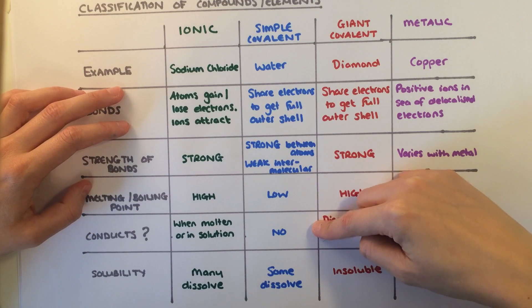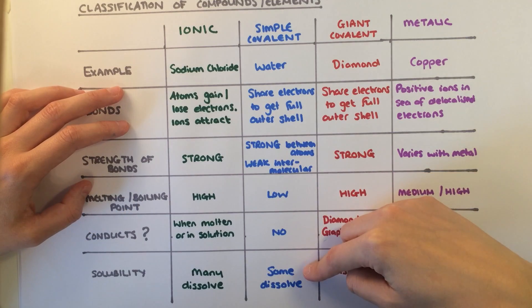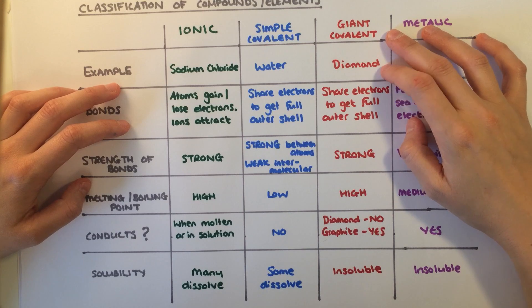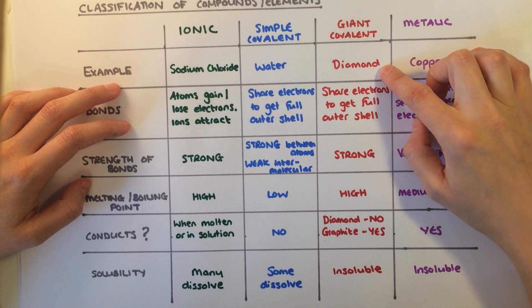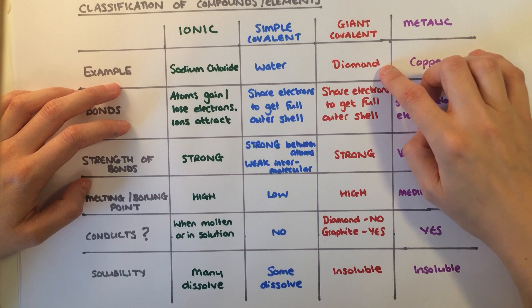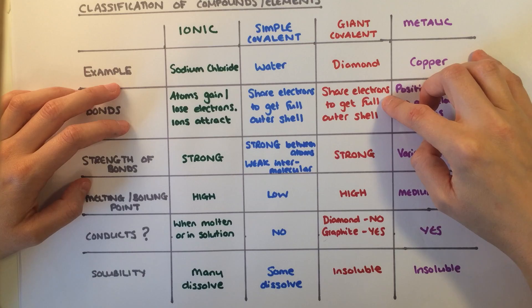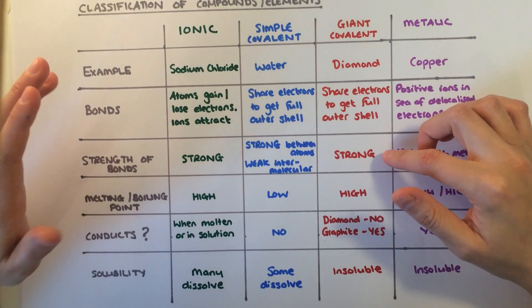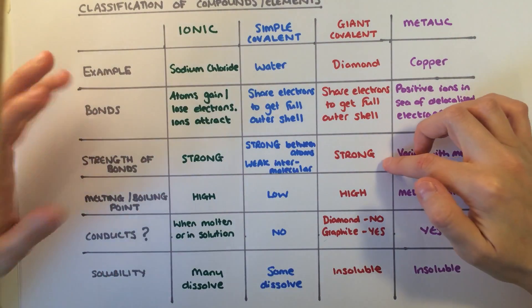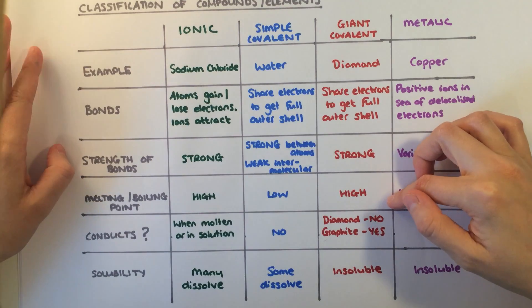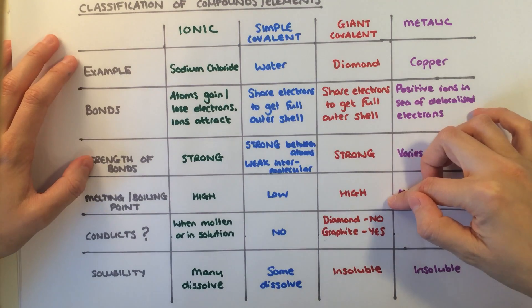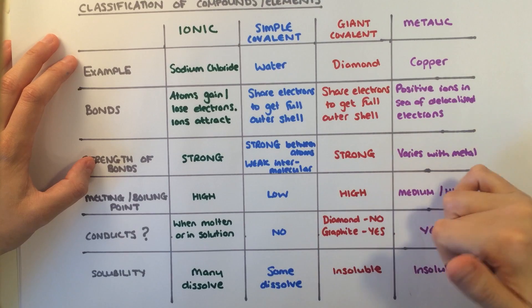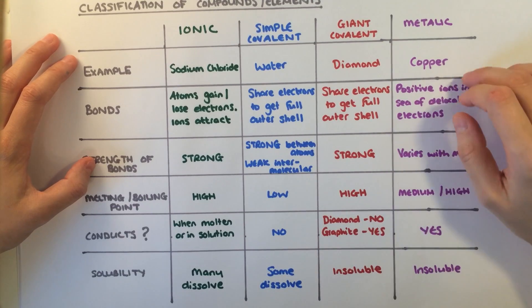They do not conduct electricity and some dissolve in water. The giant molecular covalent structures of diamond and graphite are formed in the same way as the simple structures, but they are one large molecule so there are only the strong bonds between the atoms, which means they have very high melting points. Diamond does not conduct whereas graphite does, and they are both insoluble.